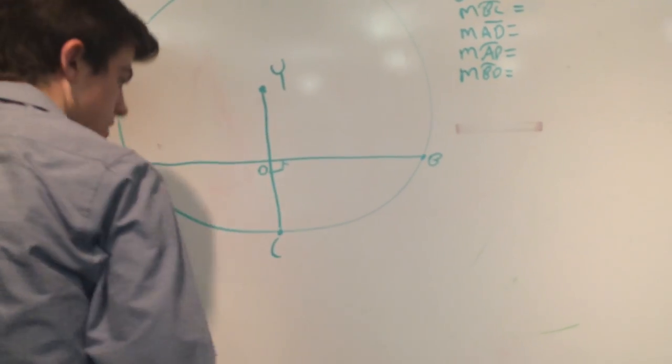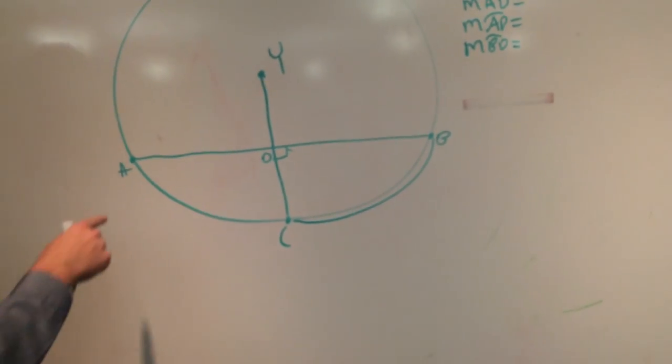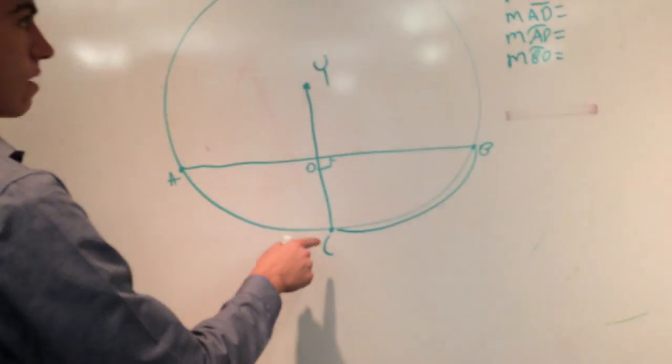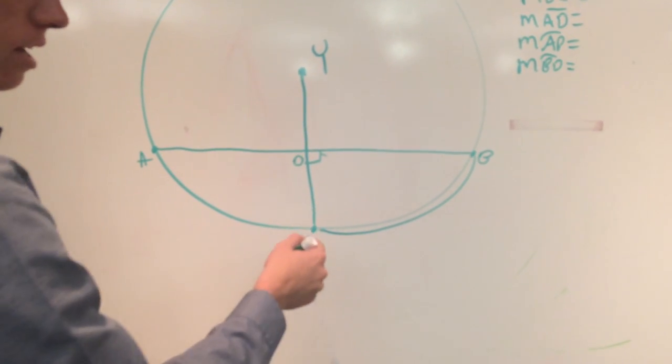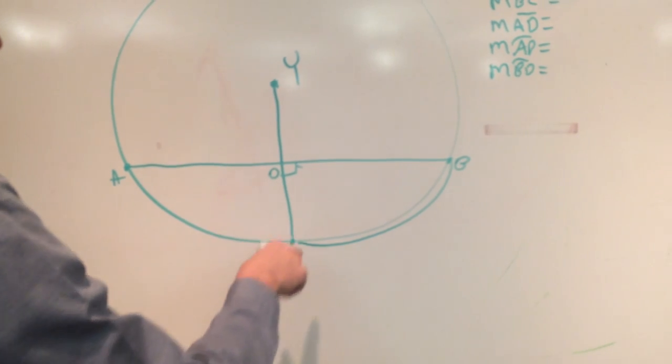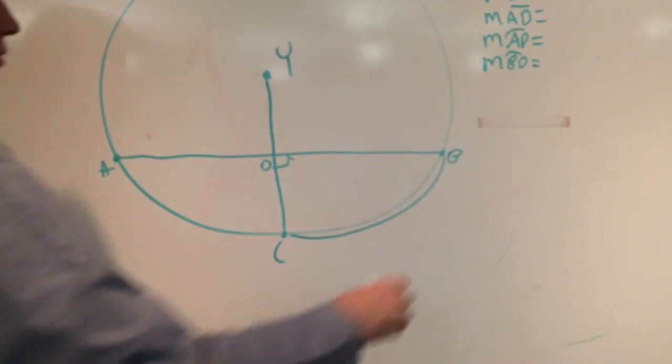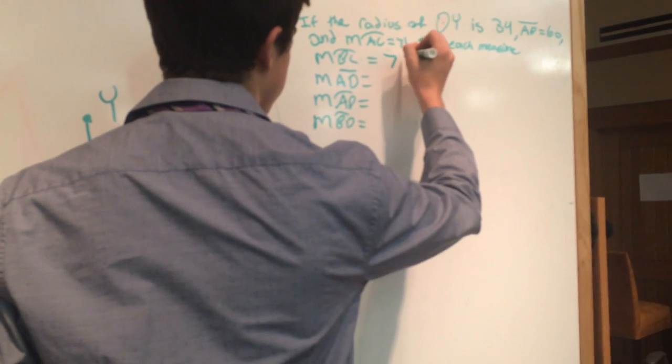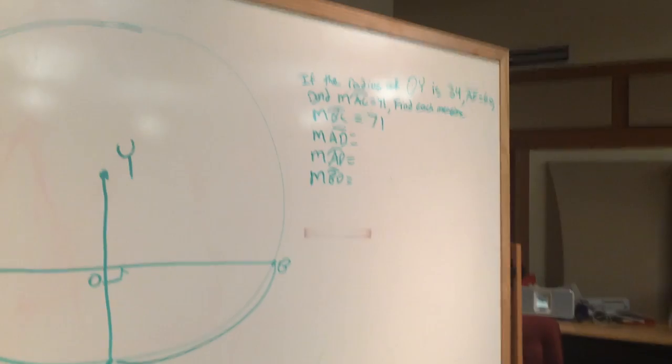That's this arc right here. We know that arc AC is 71, and we know that this bisects - meaning cuts perfectly in two - the chord and its corresponding arc. So arc BC equals 71 because they're congruent.